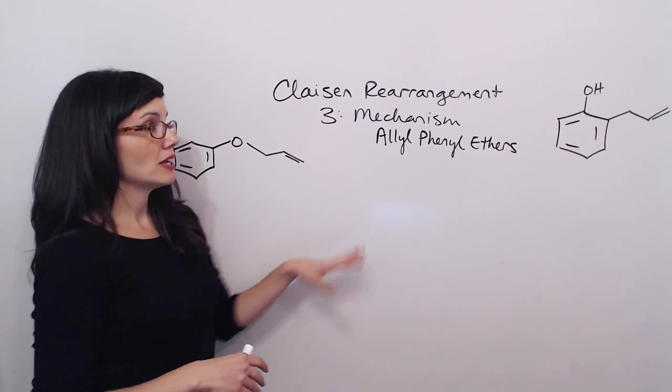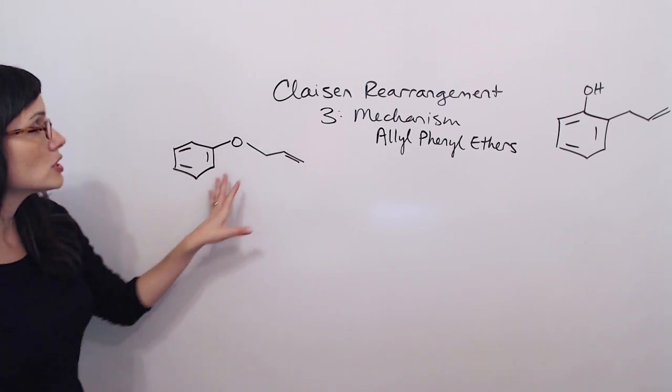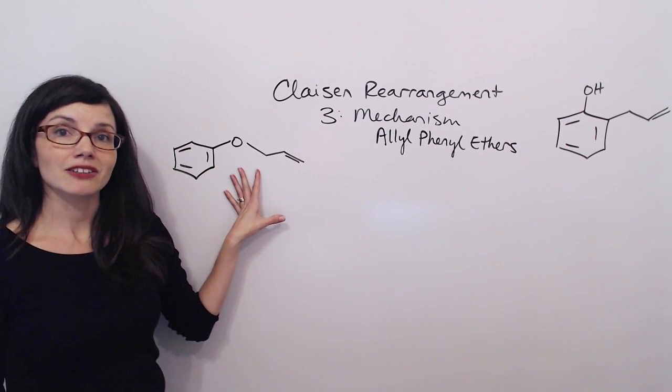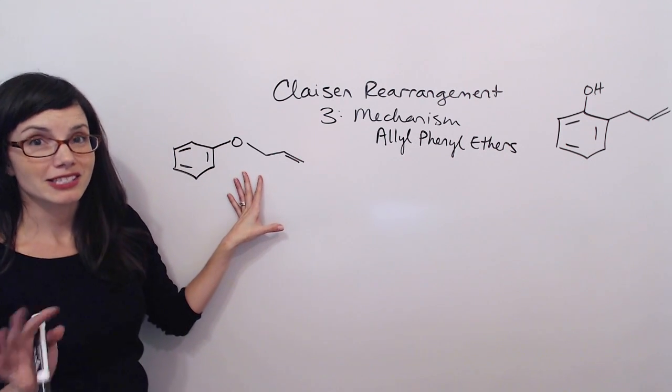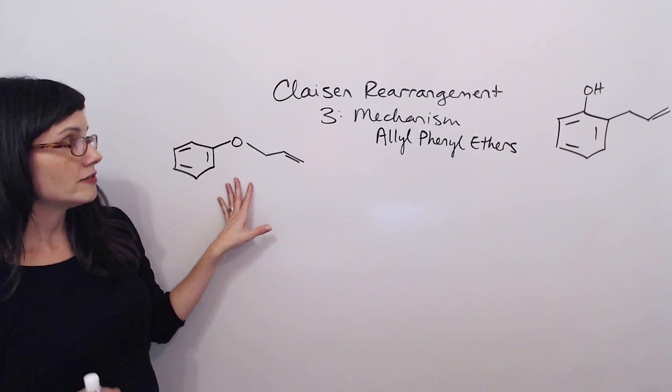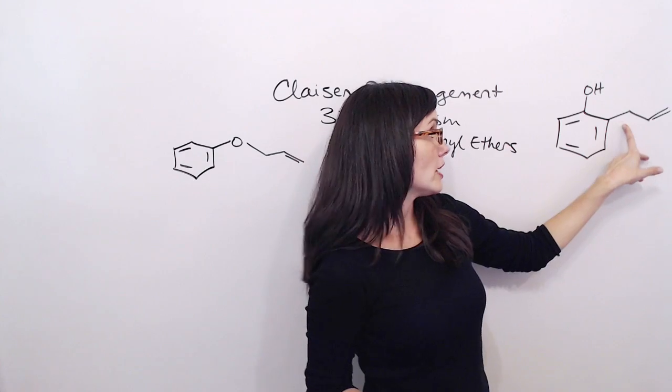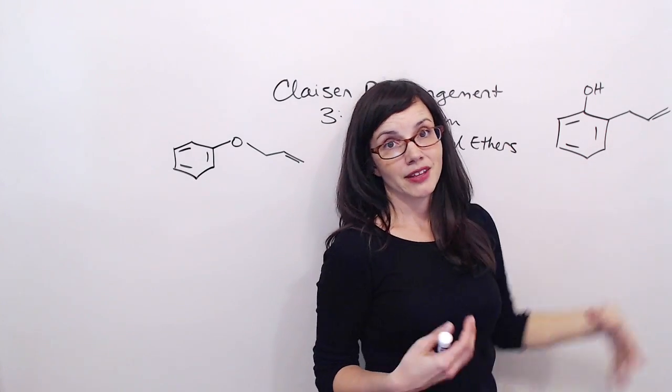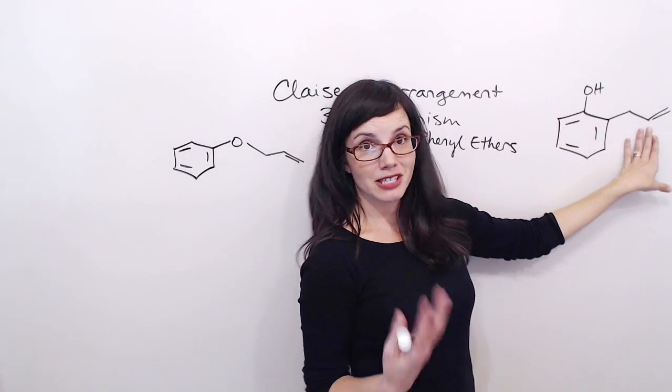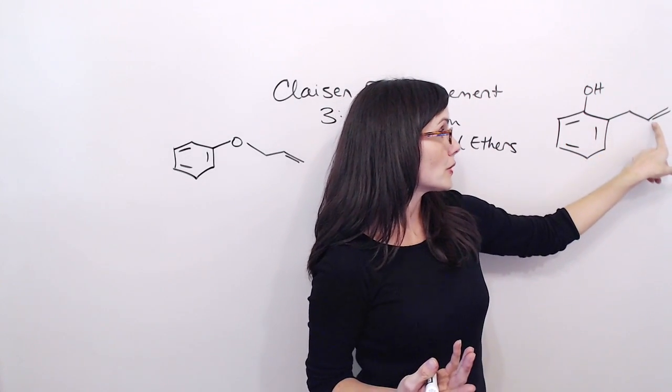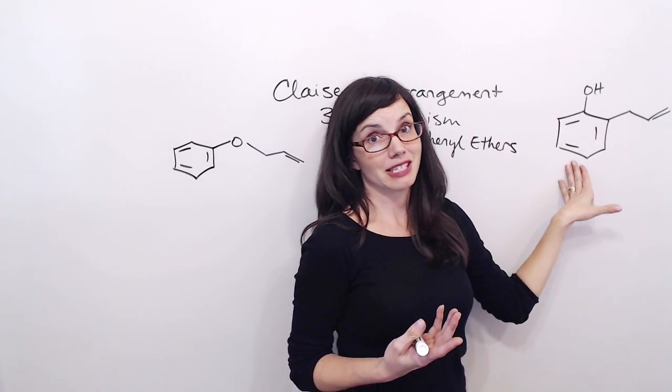We're going to do the mechanism on both the allyl phenyl ethers and the allyl vinyl ethers. So first let's start with just a really simple allyl phenyl ether. The first thing you'll want to do is just think about what kind of product it's supposed to make. Allyl phenyl ethers make a phenol and then attached to carbon 2 of the phenyl is an allyl group. And then keep in mind that the more substituted this molecule is, the more substituted this molecule may be at this position or here or here. And then any substituents off the phenyl may show up here off the benzene ring.